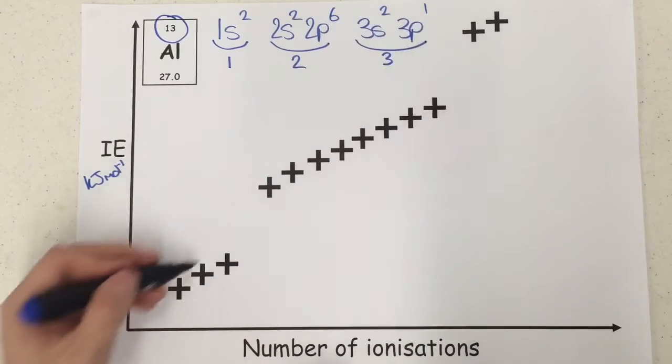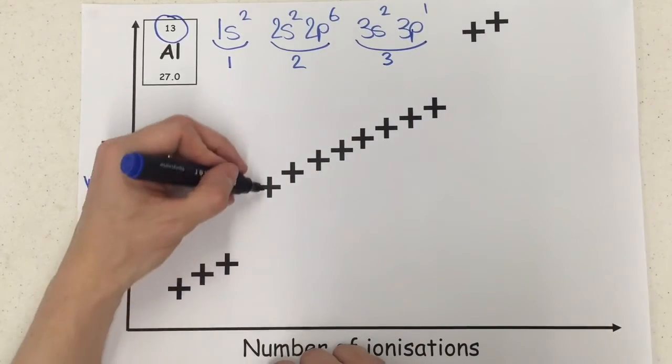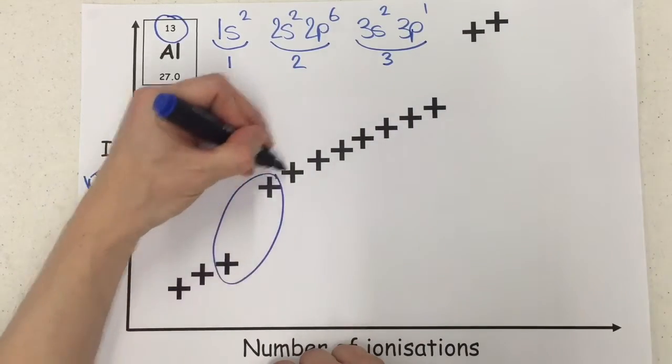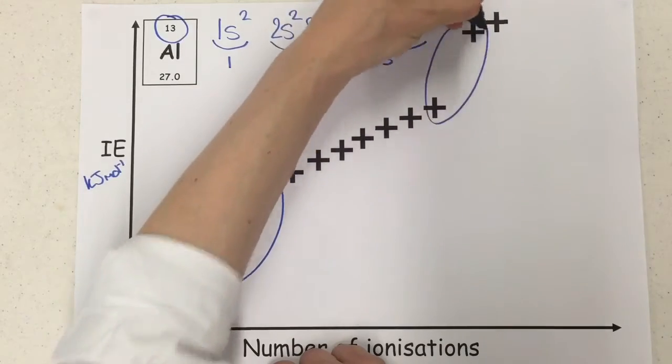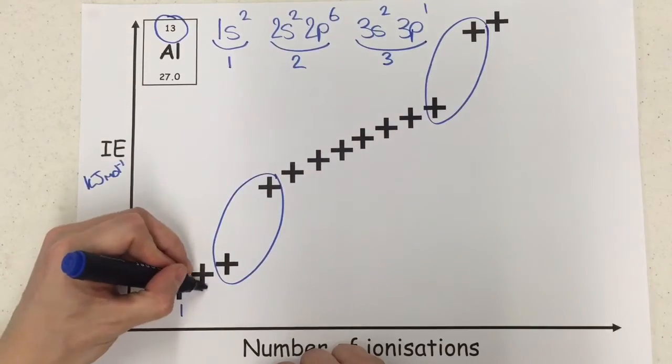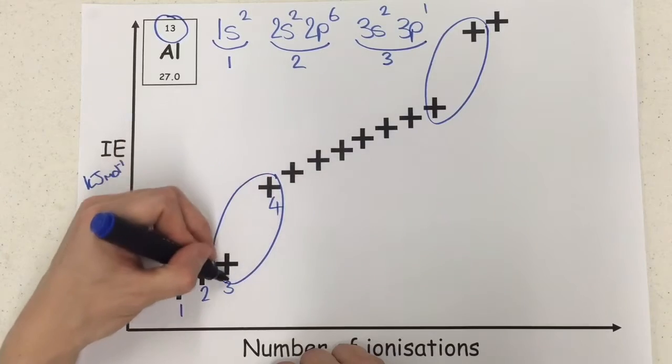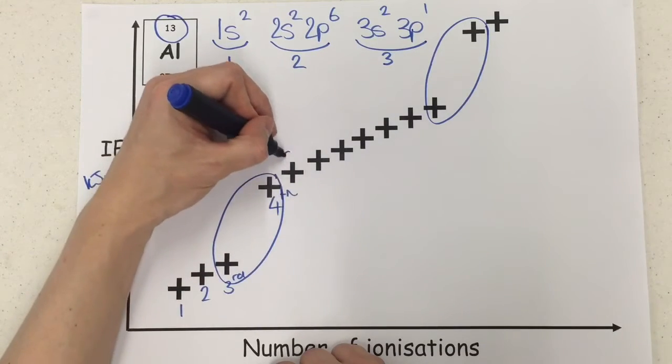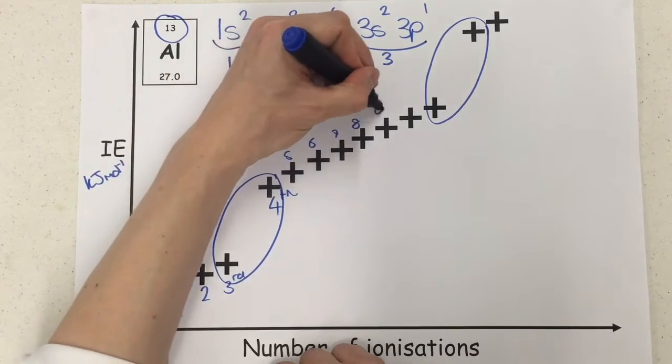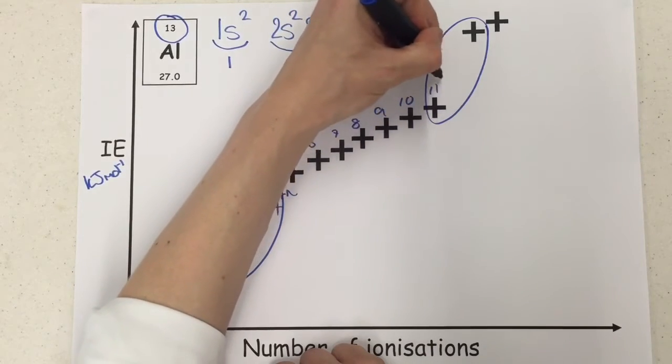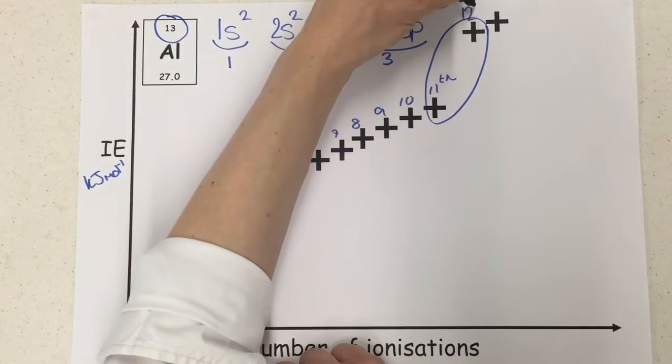Now we can also see quite straightforward from the graph as an early get-go, there are two very big jumps on our graph. There are jumps from the 1st, 2nd, 3rd to the 4th, and then 5th, 6th, 7th, 8th, 9th, 10th, 11th to the 12th.